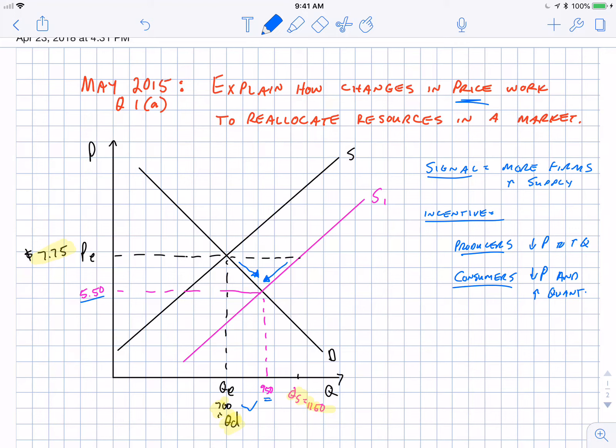The same thing is going to happen here. We have a price going down for the consumers. They get more product at a lower price. So whenever you see a question about how price works to reallocate resources, it's really asking you about the signal and incentive functions of price or the price mechanism. I want to go through that again today because it's a very important concept.